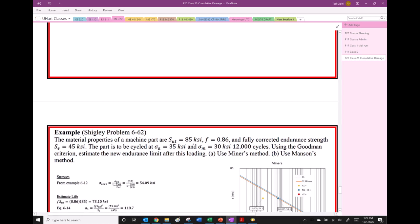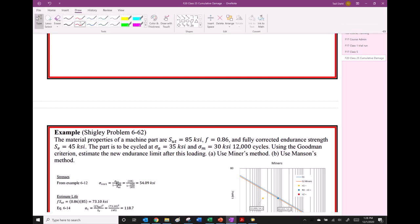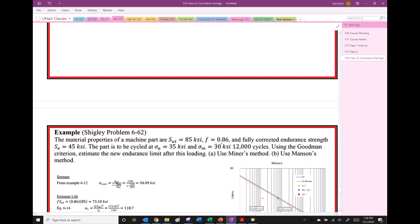So the material properties of a machine part are 85 KSI. We've looked up, that's the ultimate strength. We have looked up and found that the corresponding F to use is 0.86. We've been given the fully corrected endurance strength, so we don't have to use any of the Marin factors. We're told that the alternating stress is 35 KSI, and the mid-range stress is 30 KSI, and that right there is applied for 12,000 cycles. They want to use the Goodman criteria to estimate a new endurance limit and with both Miner's Method and Manson's.